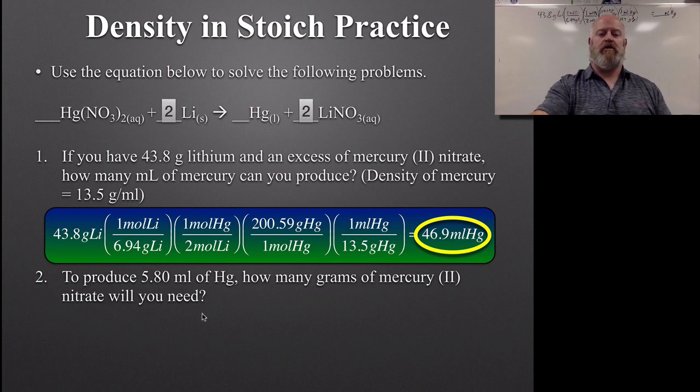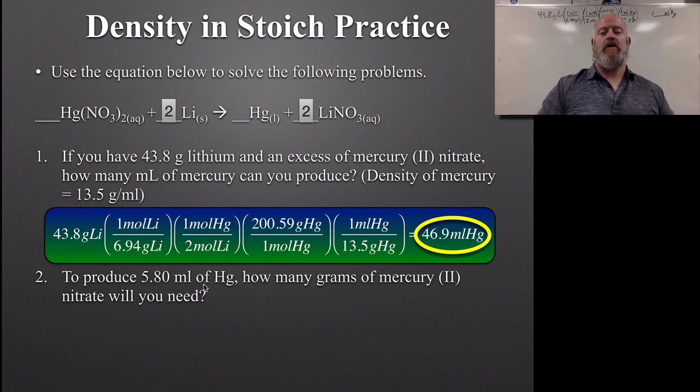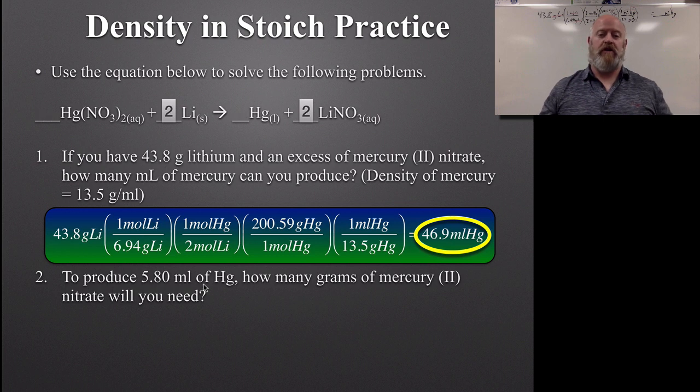Go ahead and try this one on your own. In this case, we have milliliters starting, and we're solving for grams. So instead of putting the density at the end of the equation, because we're starting with volume, we're going to have to put it at the beginning to get from milliliters into grams. So pause it here, try to work it out, and I'll show you the answer in a second.